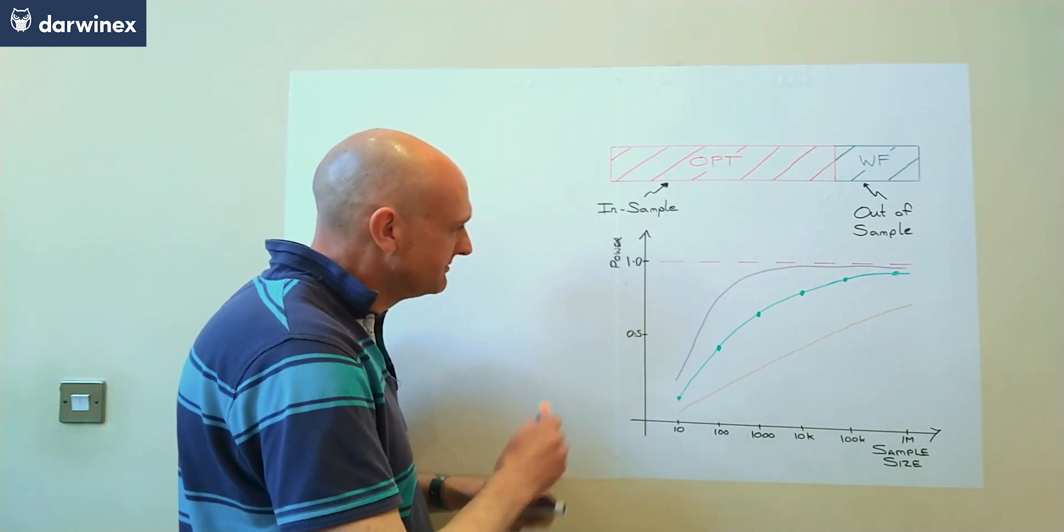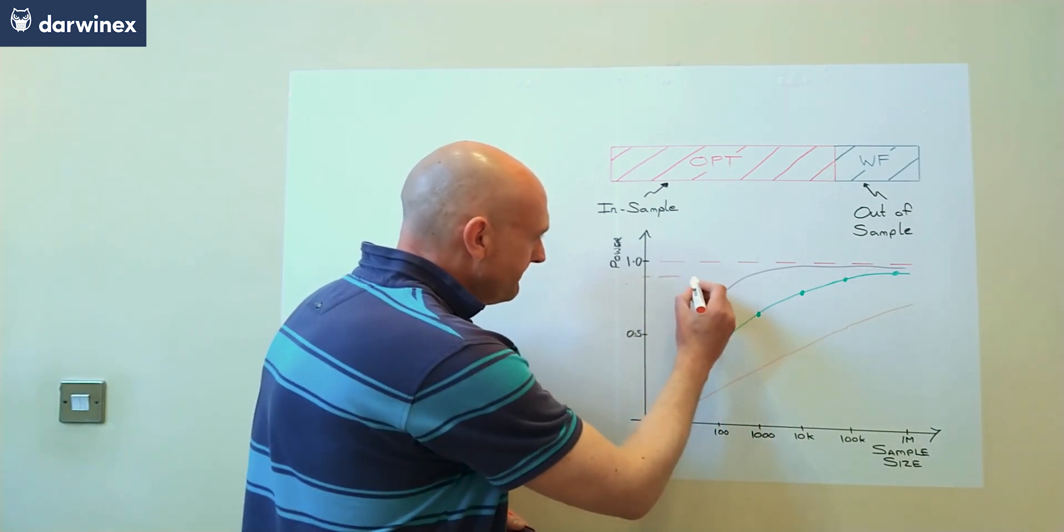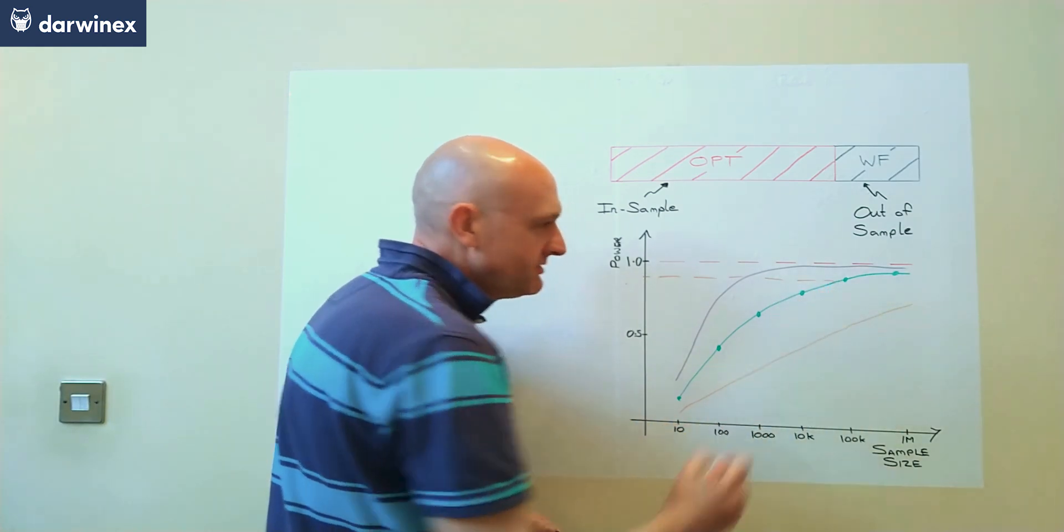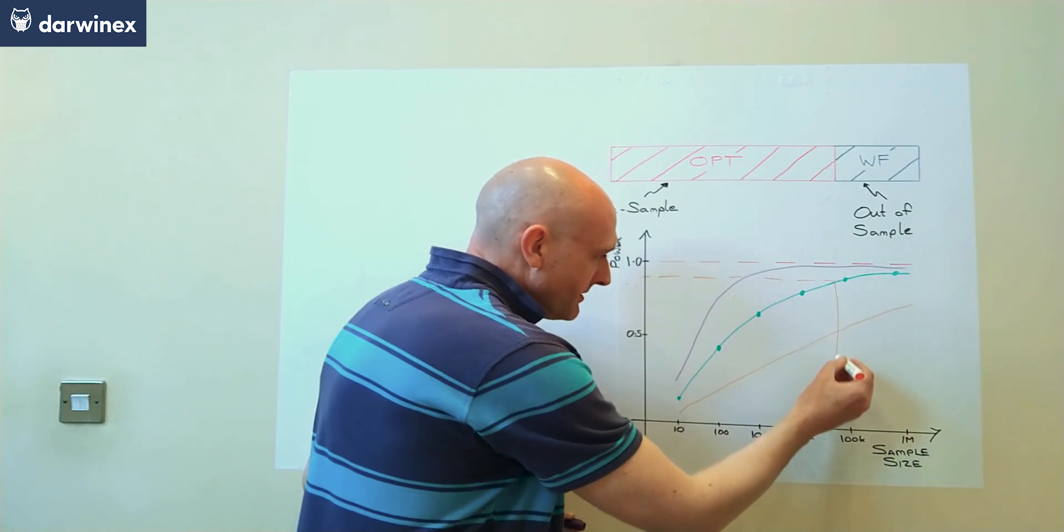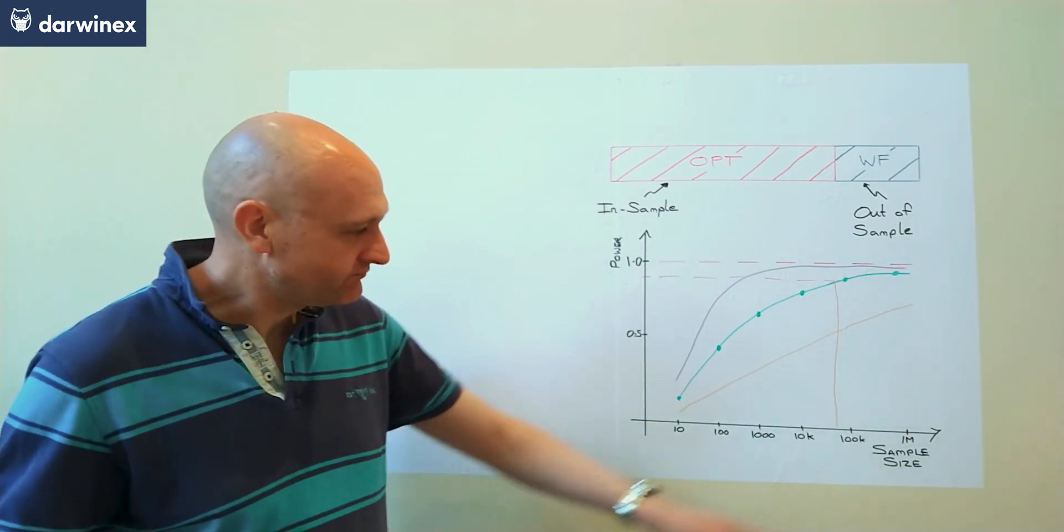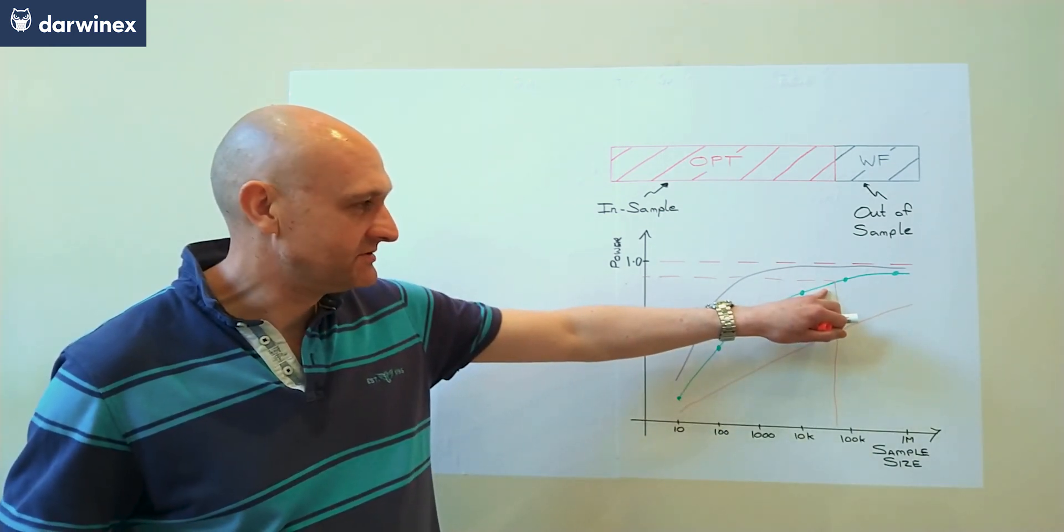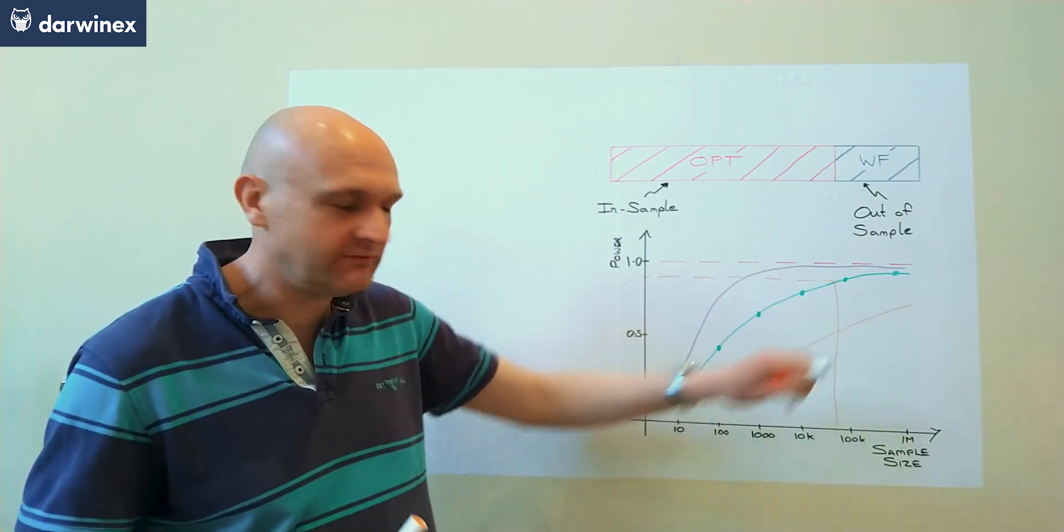So if we were going to use the 0.9 level, the way that you would find the sample size you require would be to do that. So in this particular example, we're looking at about 80,000 in order to get the confidence and the probability that we would need to have that confidence.